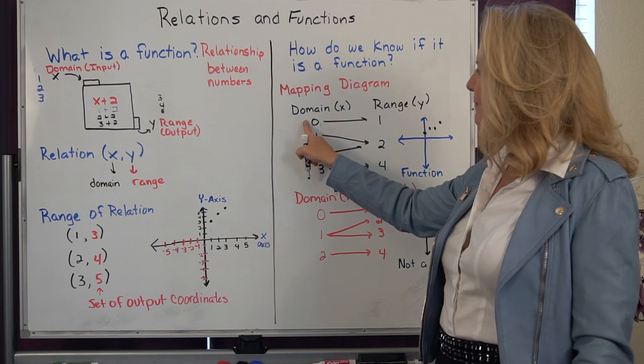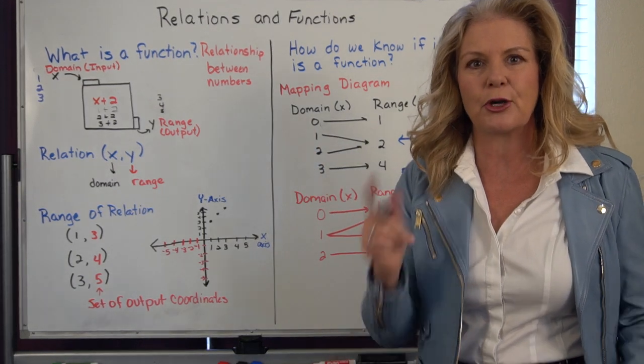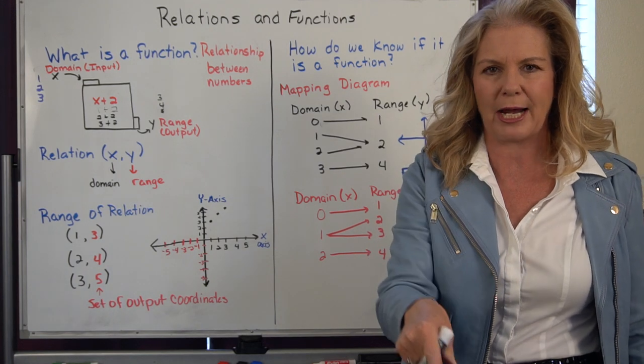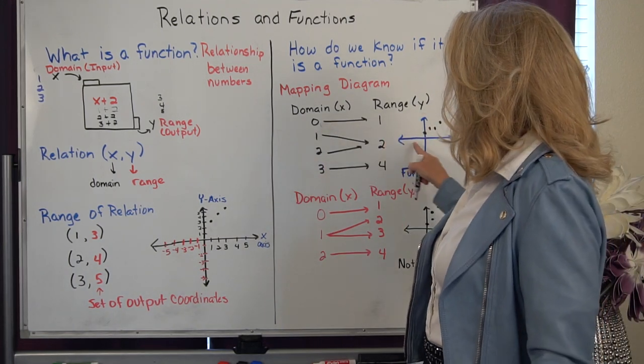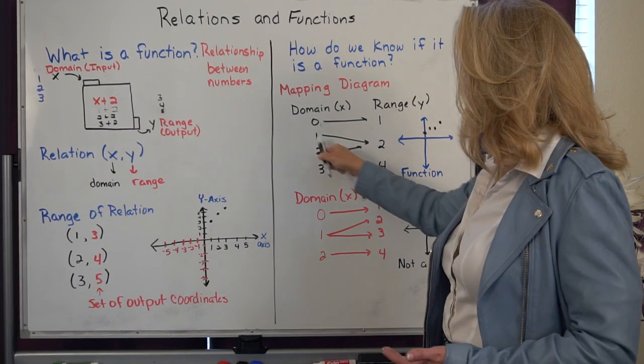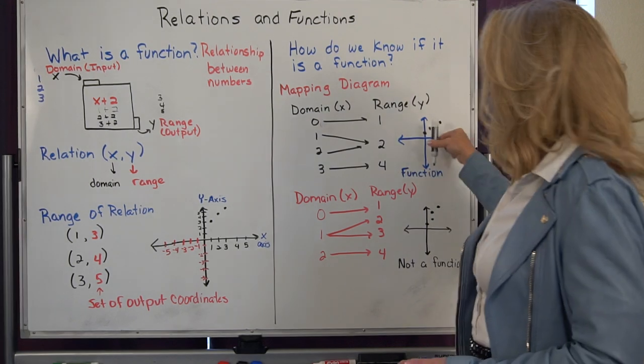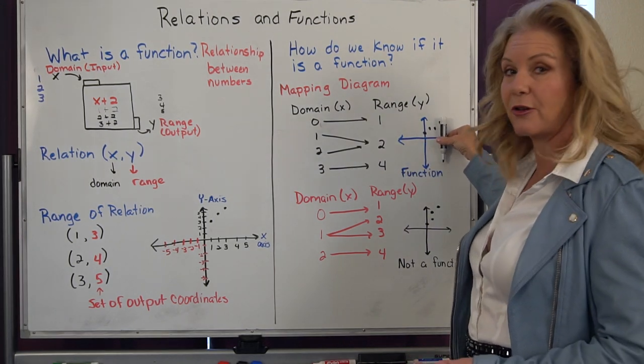So notice, I have my domain as 0, 1, 2, 3. Each of those numbers goes to their own specific range. So when I go to graph this, even though we have two points that are side by side, notice one has an output of two and two has an output of two, it still passes that vertical line test.